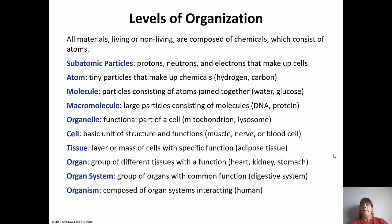Organelles are the functional parts of the cell - tiny factories each with their own function, like mitochondria making ATP (the energy of the cell) and lysosomes degrading things. Organelles are part of the cell, which is the basic unit of structure and function for living things. Cells combine to form tissues like adipose, nervous, and muscle tissue. Tissues combine to form organs like the stomach, kidney, and heart. Organs combine to form organ systems, which are organs with a common function. We have 11 organ systems. Finally, organ systems combine to make up an organism.